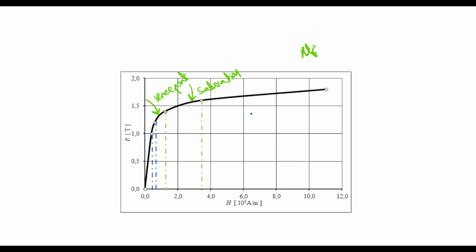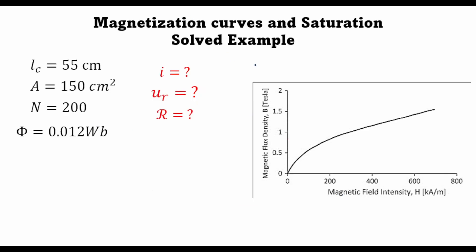In today's lecture we will be solving an example where we are given the mean path length of the core as well as the cross section. We are given the number of turns wrapped on the core, and we are asked to find out the current.